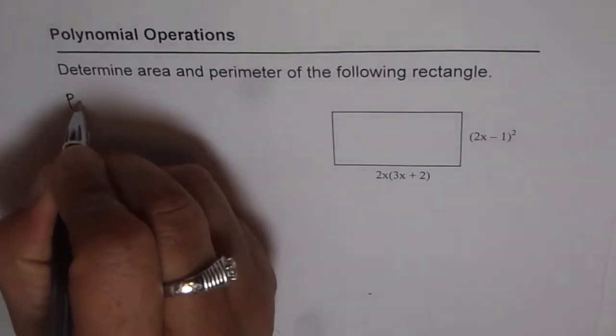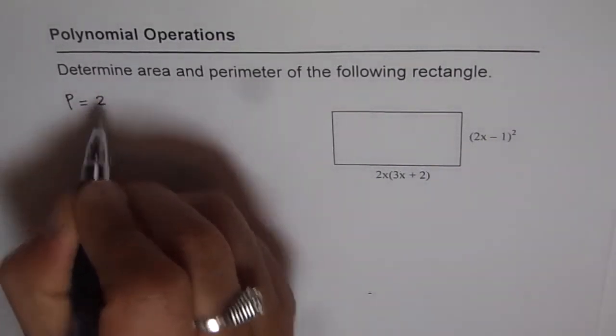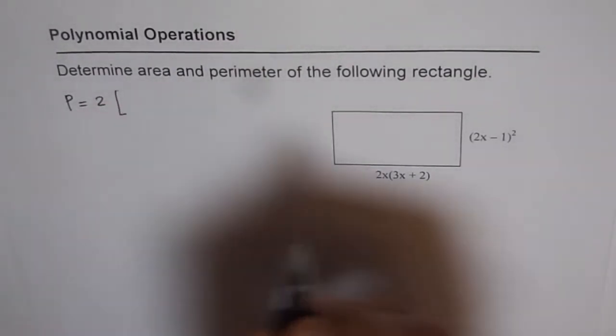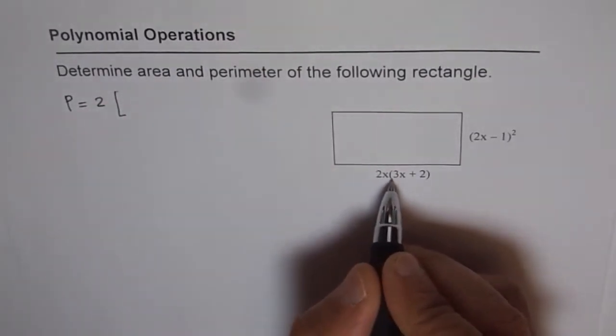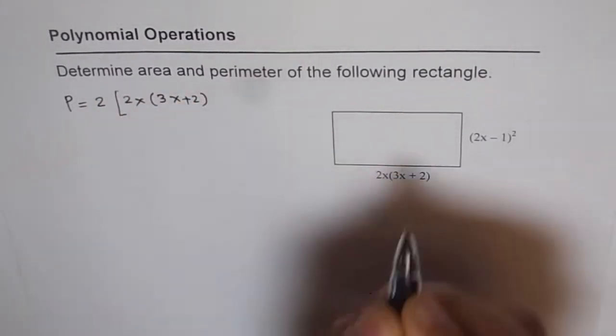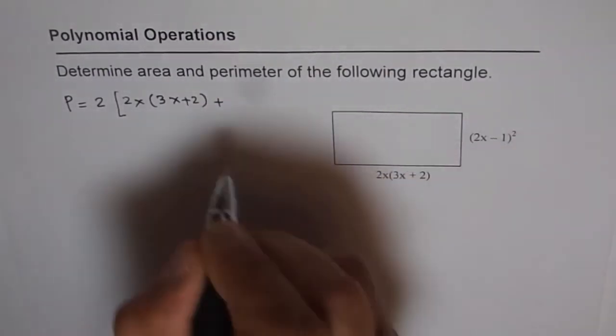So perimeter, let's say P, is sum of the sides times 2. So it's 2 times length plus width. Now length is how much?